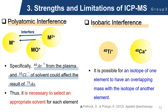For example, an argon-40 cation from the plasma would combine with a chlorine-35 anion from the solvent to interfere with the arsenic-75 signal within our sample. Thus, it is imperative to select an appropriate solvent to avoid polyatomic interferences. On the other hand, isobaric interferences arise when isotopes of two different elements overlap in mass, as can be seen in the diagram on the right. In this case, we would have to select other isobars for analysis.